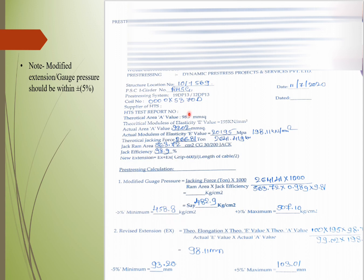Since the modulus of elasticity assumed by the designer varies as per the manufacturer details and the theoretical area differs from the actual area, we need to calculate the modified elongation. The formula is: modified elongation = theoretical elongation × (theoretical modulus of elasticity × theoretical area) / (actual modulus of elasticity × actual area). The revised elongation comes to approximately 98.11 mm, with a ±5% tolerance giving a minimum elongation of 93.2 mm and a maximum of 103.10 mm.